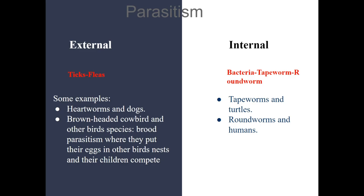An important example of a parasitism subtype is brood parasitism — the brown-headed cowbird and other species of birds. The brown-headed cowbird lays its eggs in another bird's nest, and its eggs look very similar to the host bird's eggs. The eggs hatch there, and the cowbird's young kick out the host bird's young, harming the host's offspring and taking away food that could have been used for the host's chicks, while the cowbird benefits because it does not have to tend to its young, and its young get free protection from the host parent.